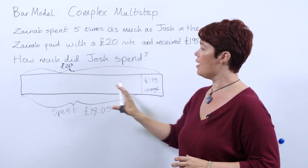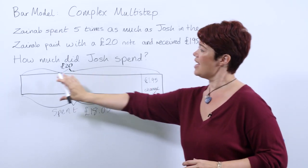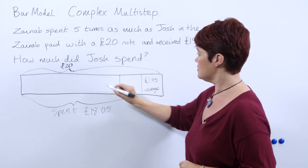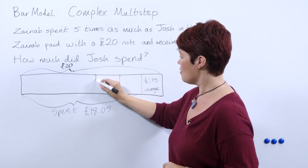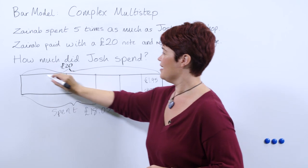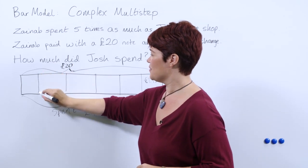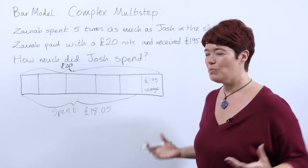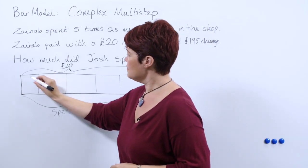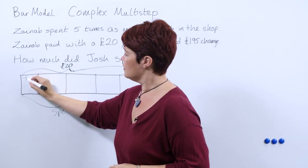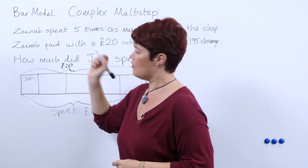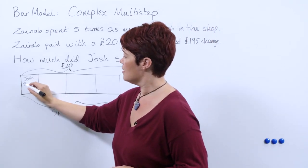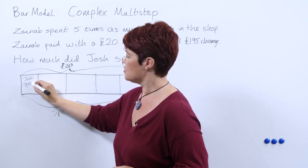So looking at our bar, we're going to divide this into five equal blocks — trying to be as accurate as possible, getting the proportions about right. So each one of these blocks is a fifth of what Zainab spent, meaning one of these blocks is what Josh spent.